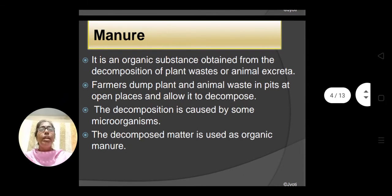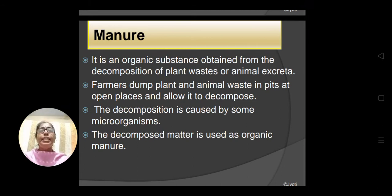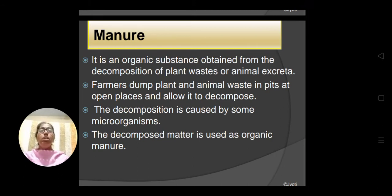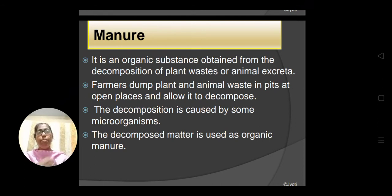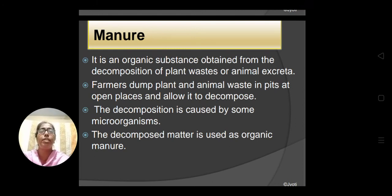Now let me explain what is manure and what is fertilizer. Manure is an organic substance obtained from decomposition of plant wastes or animal excreta. There are two types of chemical substances — organic and inorganic. Organic substances are generally obtained from living organisms like plants and animals, whether from their dead parts or waste materials released from their body.